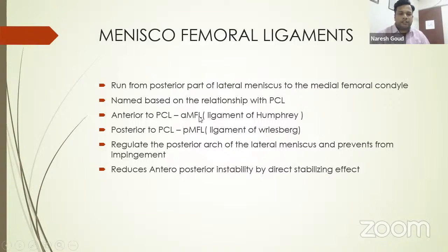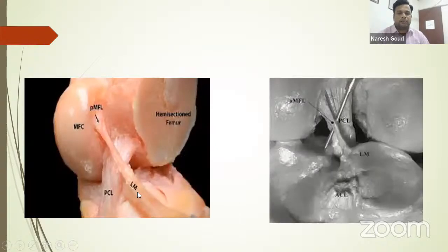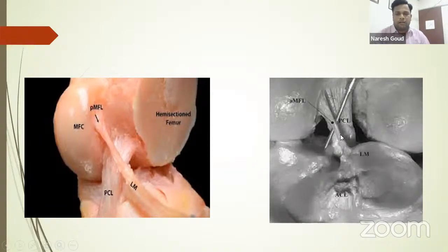The meniscofemoral ligaments attach the lateral meniscus to the medial femoral condyle. Named in relation to the PCL: the anterior meniscofemoral ligament (ligament of Humphrey) is located anterior to the PCL, and the posterior meniscofemoral ligament (ligament of Wrisberg) is located posterior to the PCL. They regulate the posterior arch of the lateral meniscus, prevent lateral meniscus impingement, and also reduce anteroposterior instability by a direct stabilizing effect. Commonly, the anterior meniscofemoral ligament is not present; the posterior meniscofemoral ligament is mostly present.